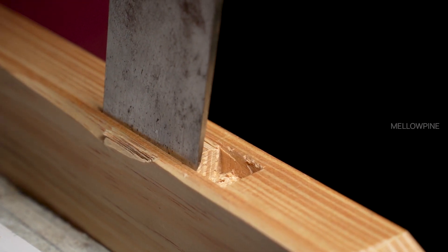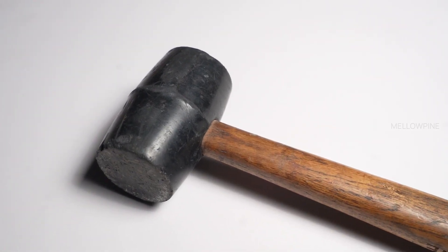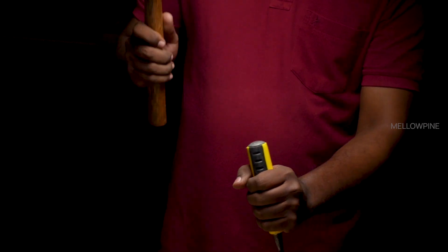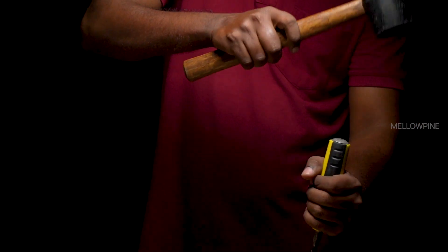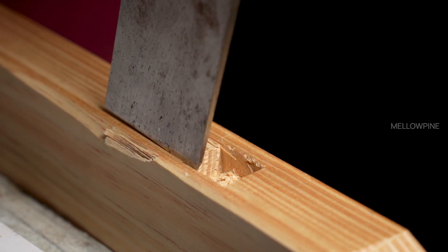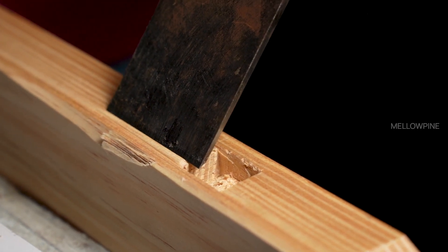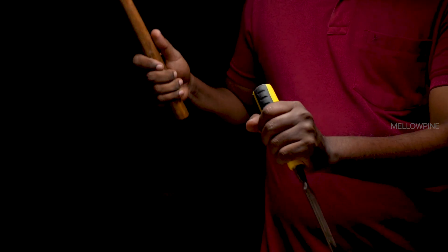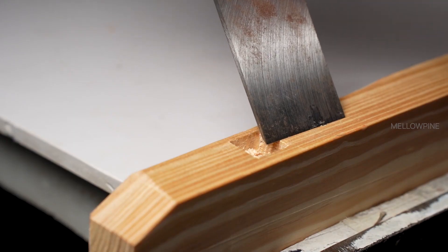In cases where a significant amount of wood needs to be removed, such as with a mortise, use a mallet. Ensure the beveled side of the chisel faces the waste material while the back side faces the wood that needs to be preserved. Begin by tapping firmly on the chisel to initiate the cut. Fewer taps are recommended to minimize movement between blows. Work on the ends and then move to the sides, following the established guidelines. Use controlled force and accuracy to achieve the desired results.